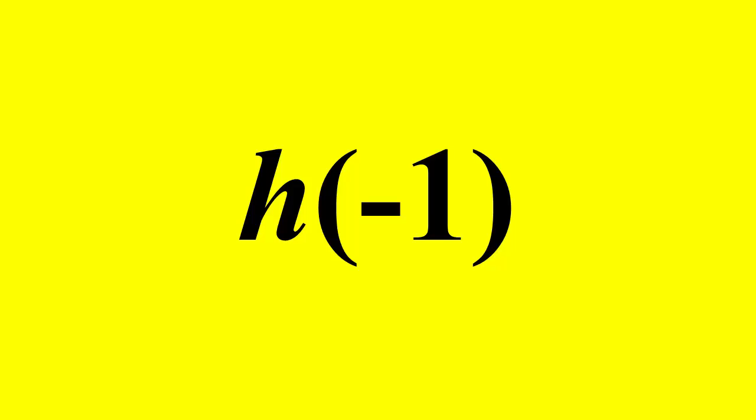I'm going to show you how to interpret the meaning of this type of notation, and this is called function notation. And the way you would read this is, this says h of negative one. But before we get into that discussion, I'm going to show you a different situation to kind of give you an idea of what functions are really about.